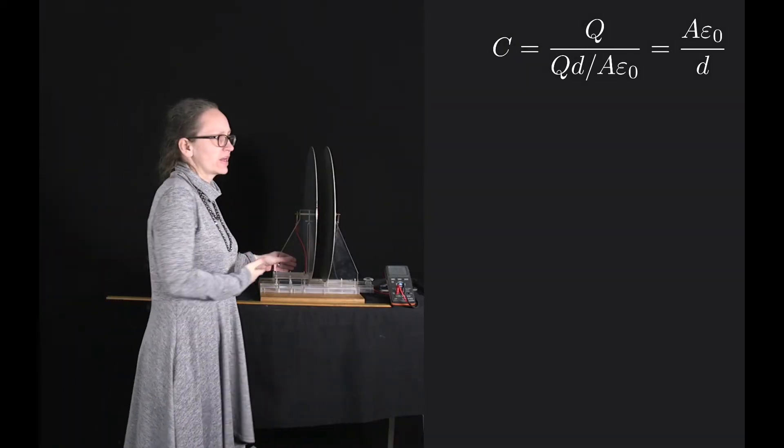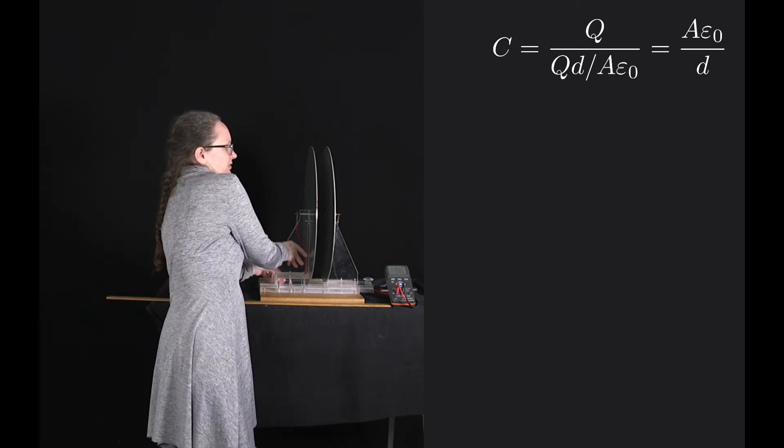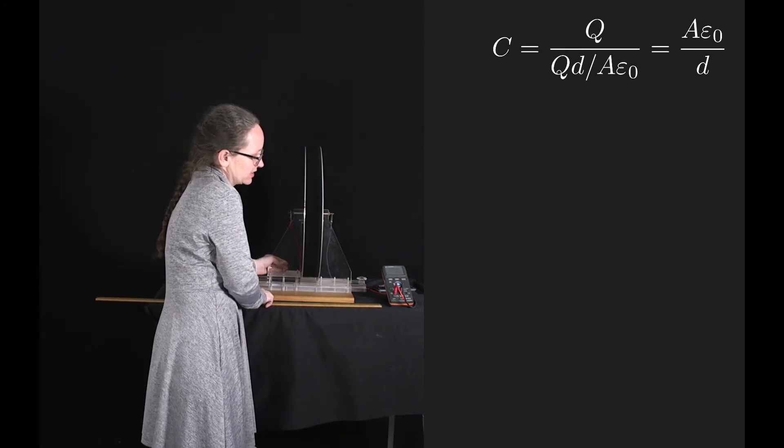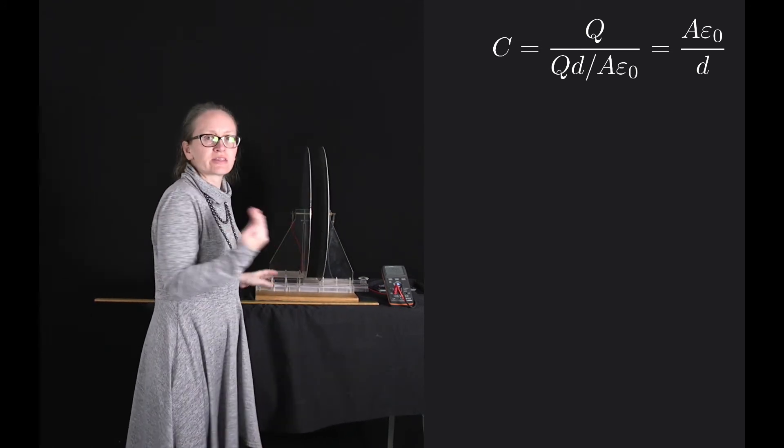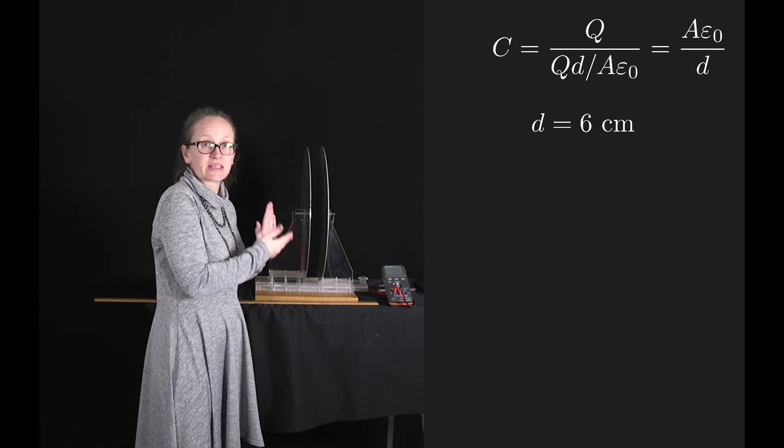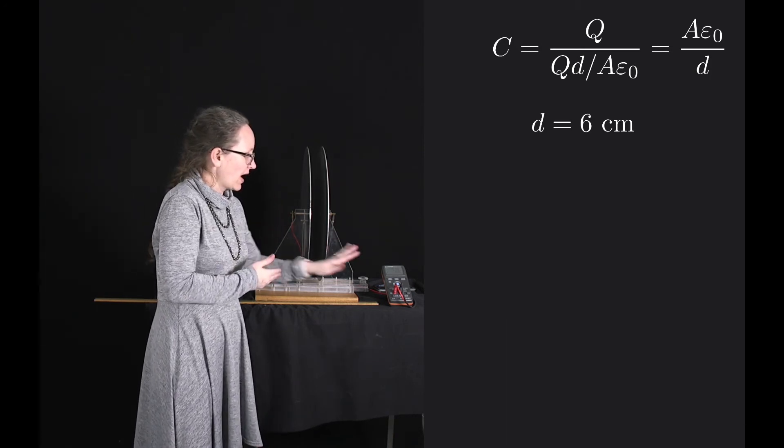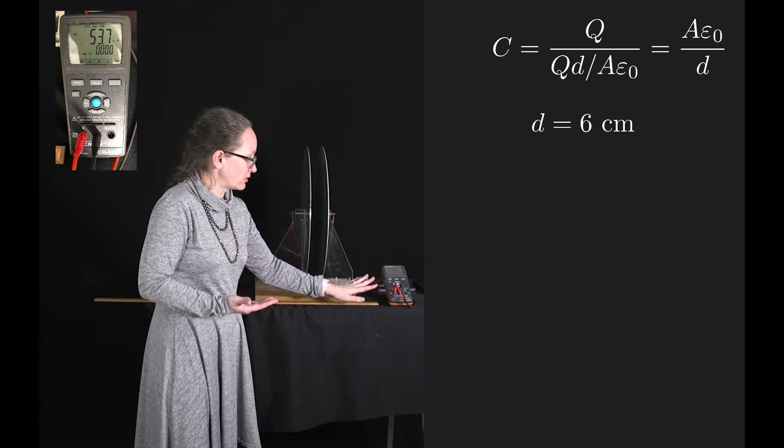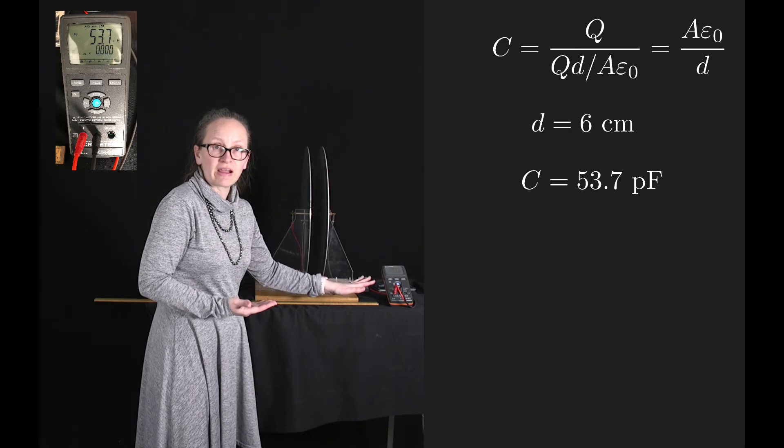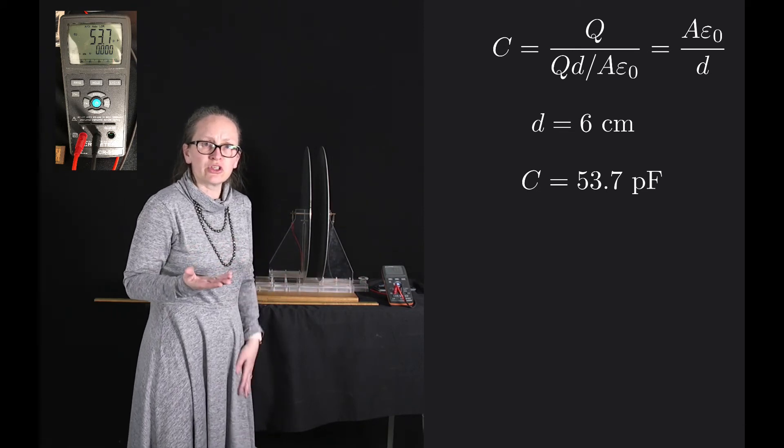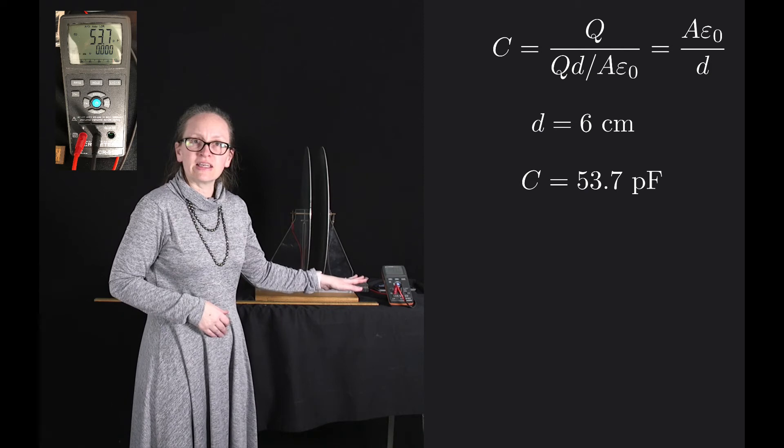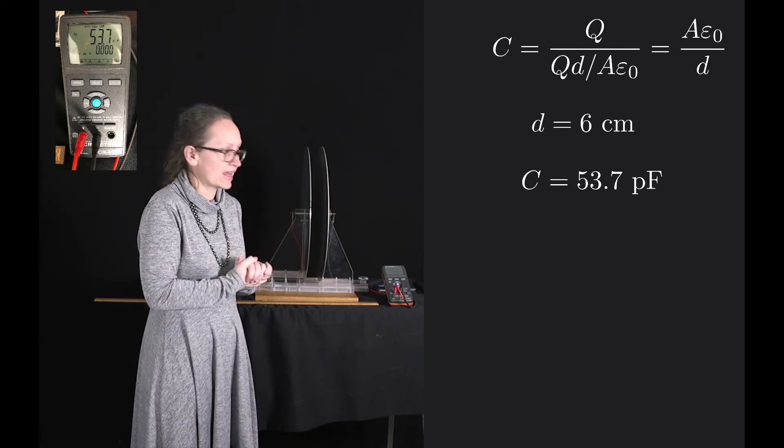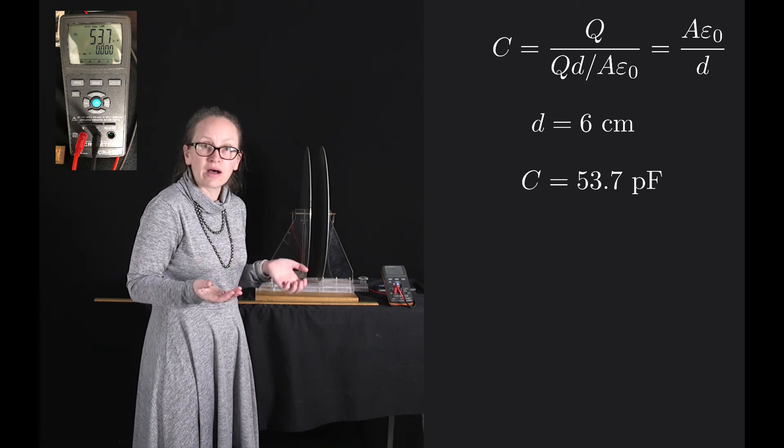Here I have a parallel plate capacitor. You can see it consists of two circular parallel plates. At the moment the plates are about six centimeters apart from each other, and our capacitance meter is giving a capacitance of 53.7 picofarads. Now what I want you to do is predict what reading is the capacitance meter going to read when I change the distance between the plates to 12 centimeters.